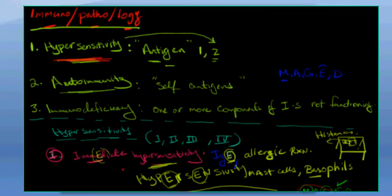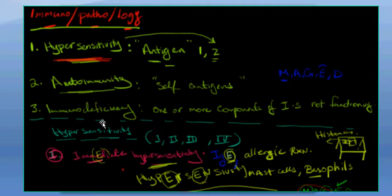It's a quick review on immunopathology. Number one, we have hypersensitivity. Number two is autoimmunity. And number three is immunodeficiency.